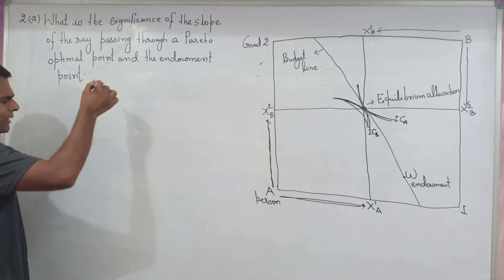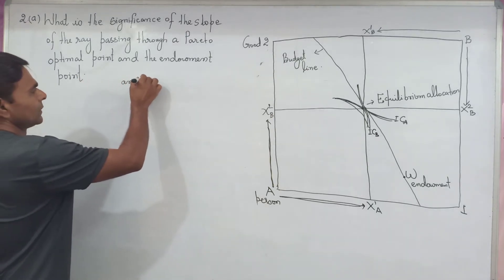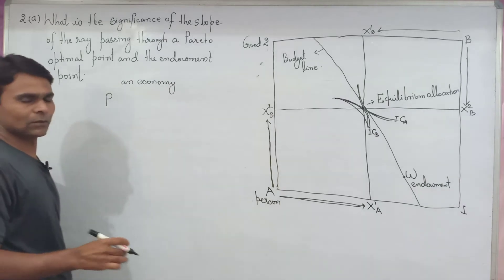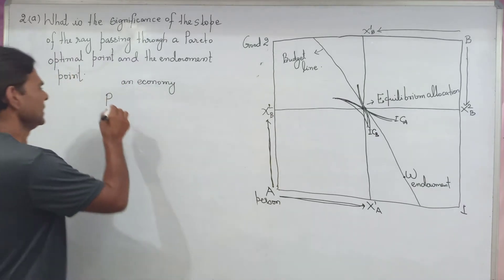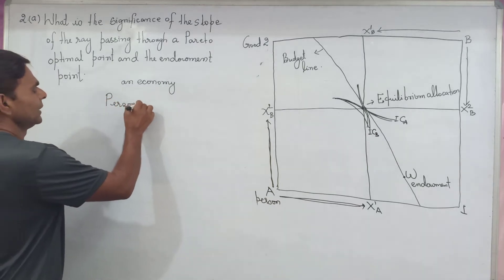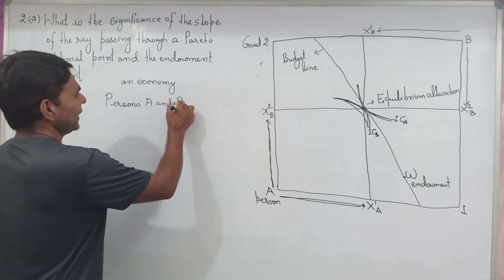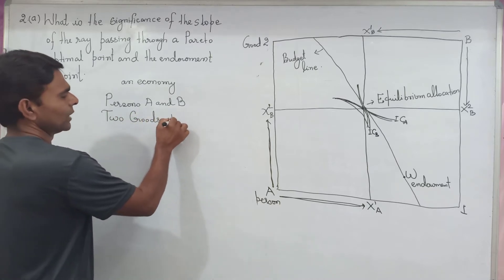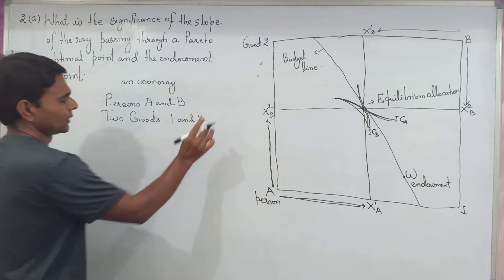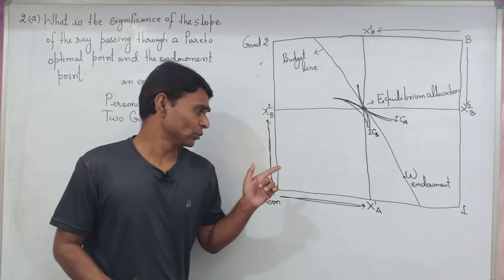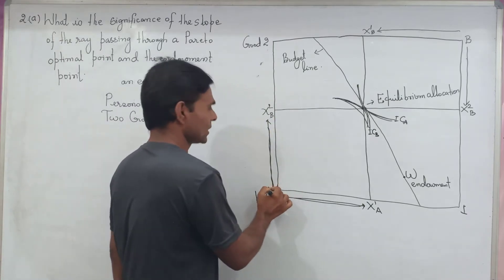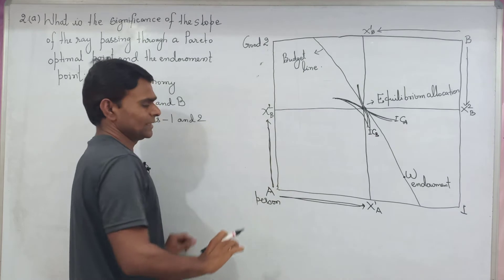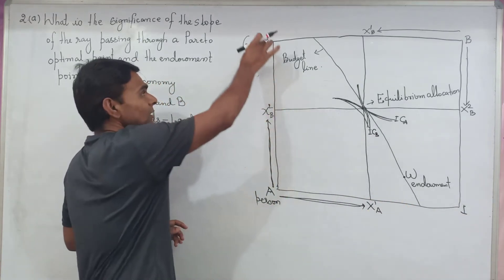Consider an economy consisting of two persons, A and B, and two goods. Goods one is measured horizontally and goods two is measured vertically.